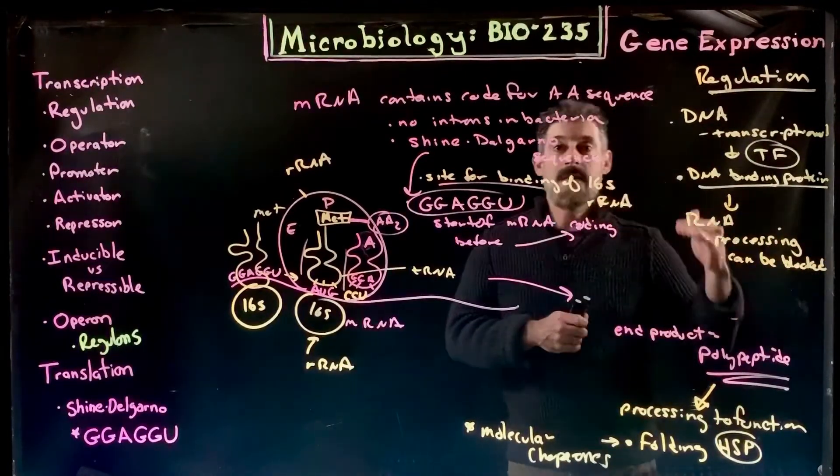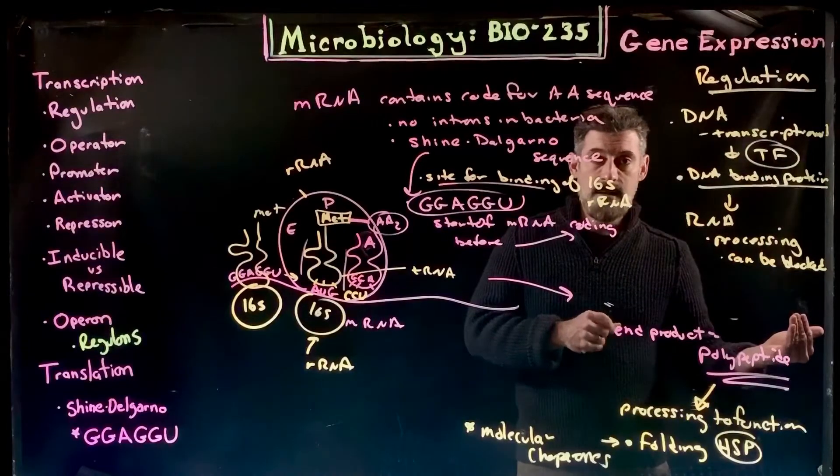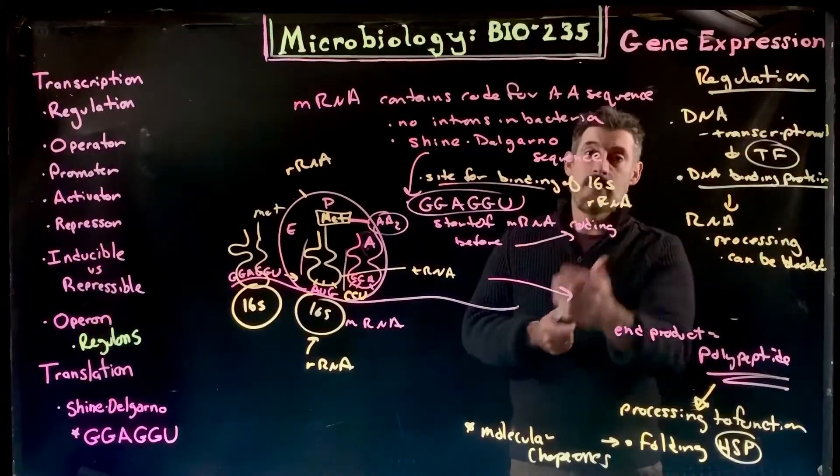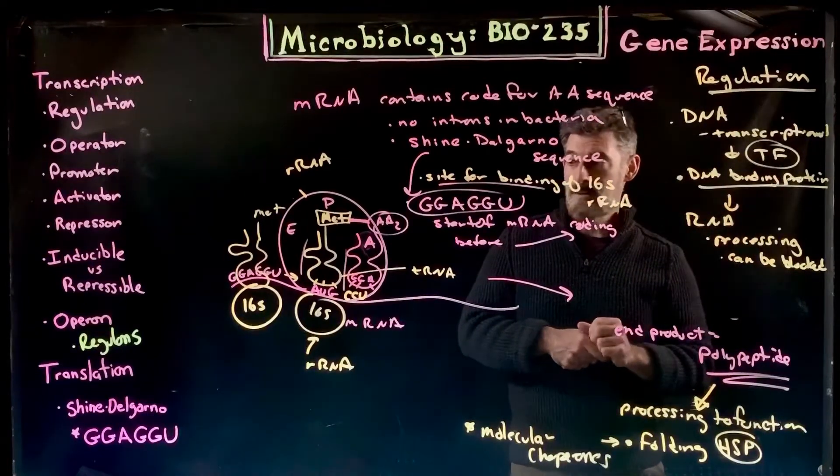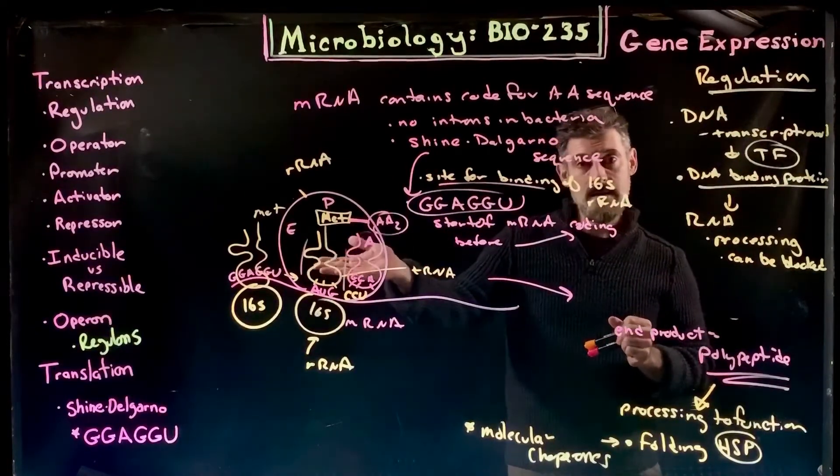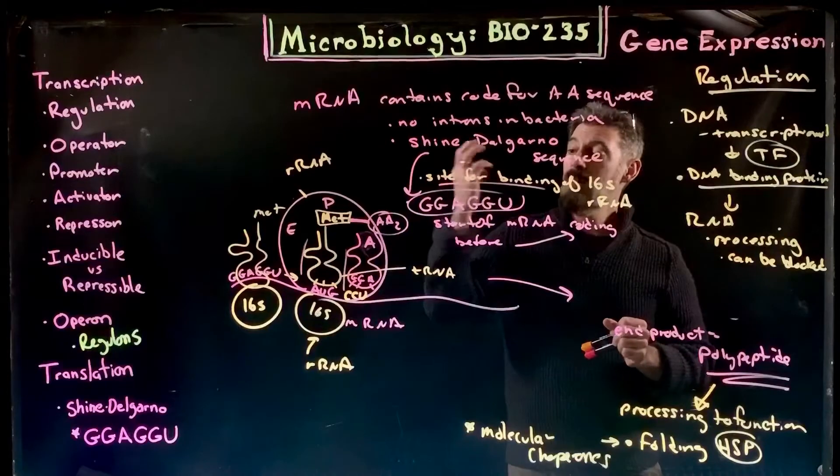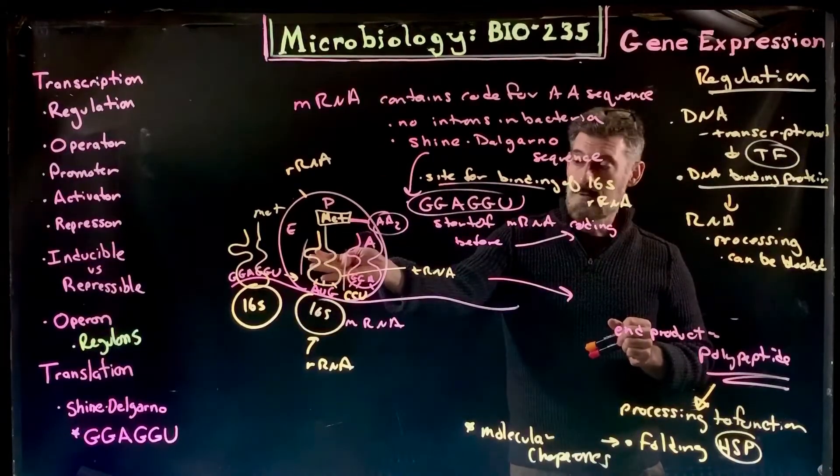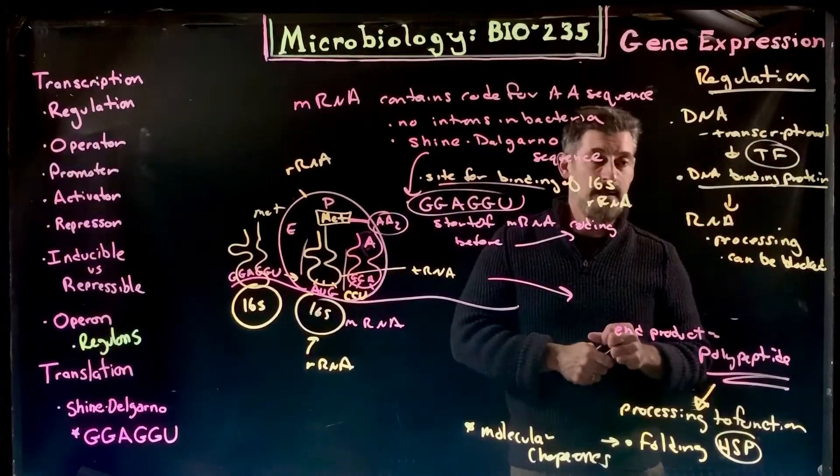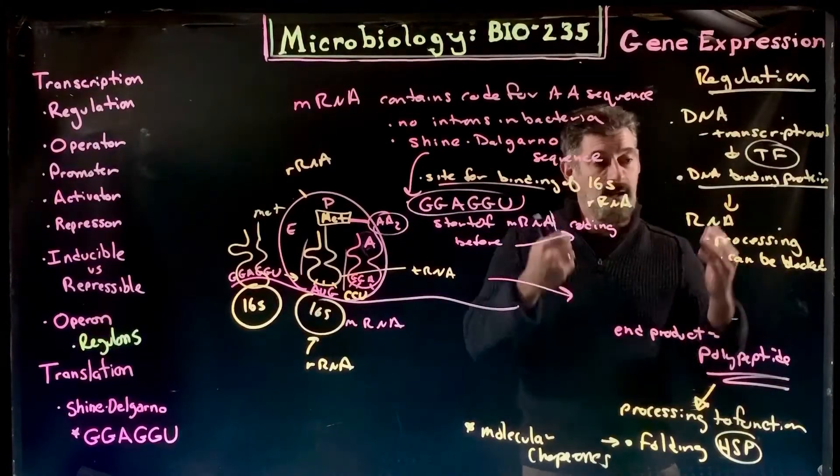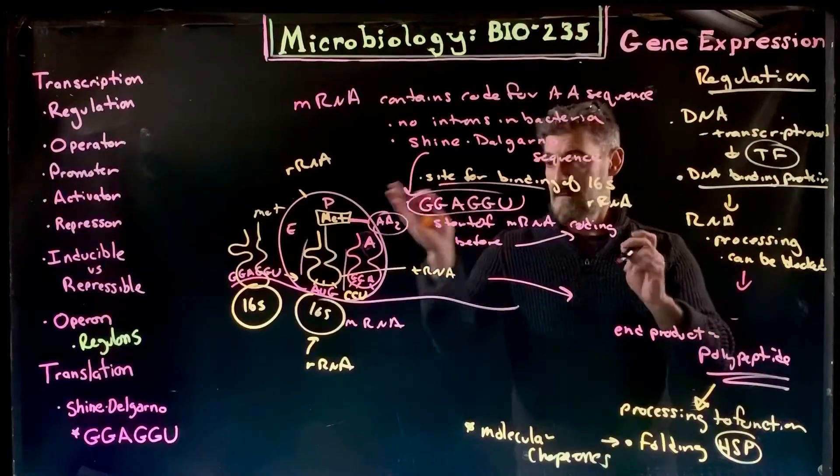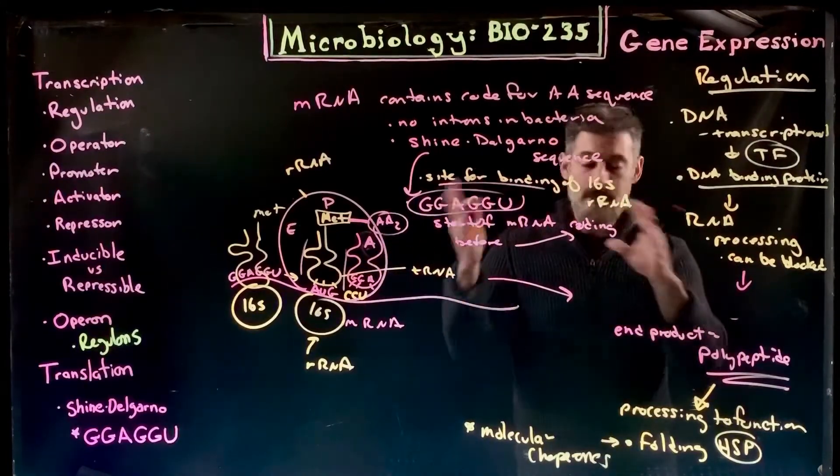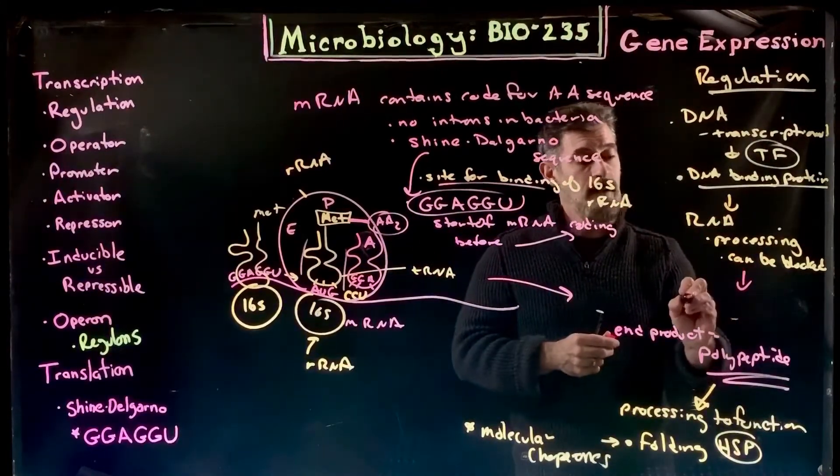We can block that machinery, the ribosomal machinery, so that the process will not read the messenger RNA. If we interfere with the Shine-Delgarno sequence, for example, then we won't get the 16S ribosomal subunit binding to it. We won't be able to initiate the whole process.